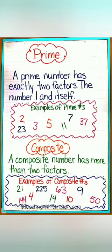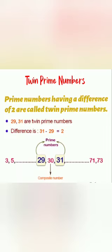So these are some examples given to you of composite numbers. Then next comes twin prime numbers. So what are twin prime numbers? Prime numbers having a difference of two are called twin prime numbers, which means two prime numbers like twenty-nine and thirty-one, these are twin prime numbers.